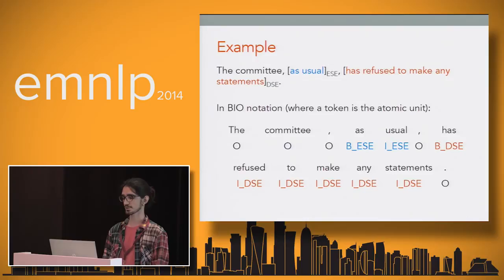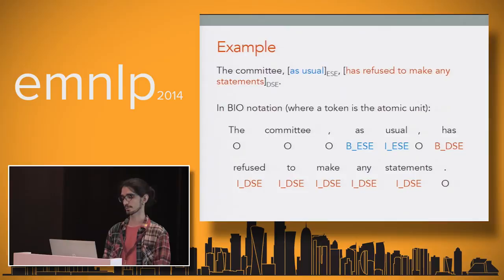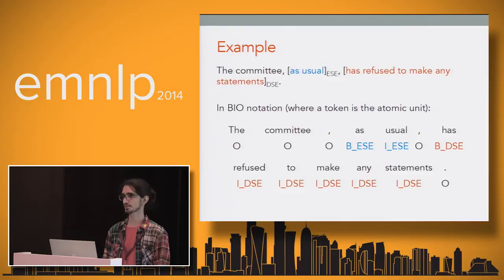Since we're going to adopt the token-level sequential prediction approach, we have to convert the phrase-level labels to token-level labels. We do that using the BIO scheme, which stands for Beginning, Inside, and Outside. Every phrase label is converted to a sequence of token labels, starting with the B tag and continuing with the I tag, and everything else is Outside.